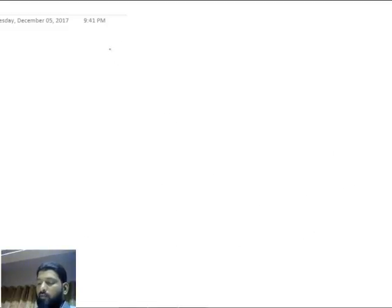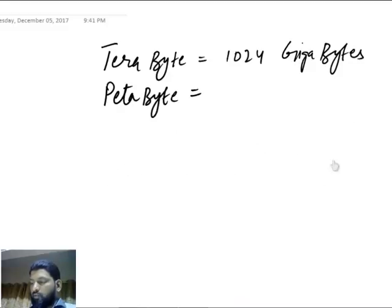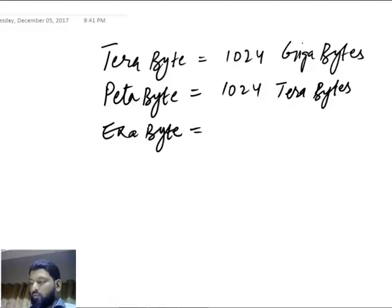Then you have a terabyte, which equals 1024 gigabytes. And then after terabyte, you have petabyte, which equals 1024 terabytes. And you have exabyte, which equals 1024 petabytes.